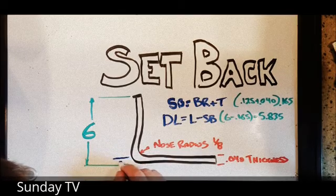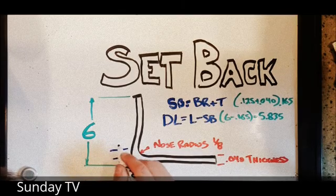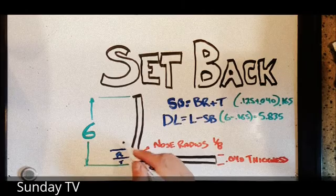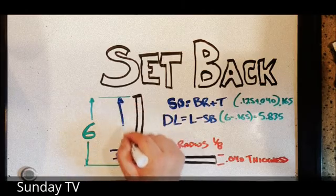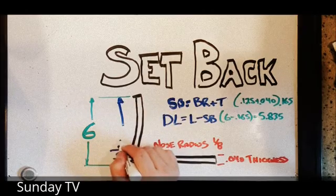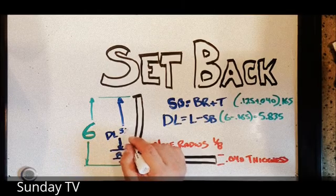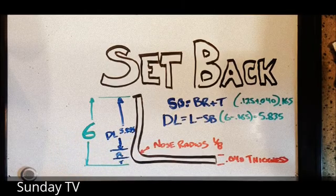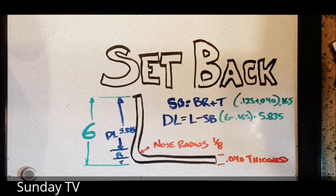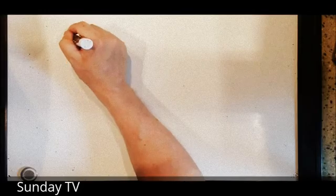So you can see here, our original length was six inches. We take off the thickness of the material, we take off the radius of the bend, and what we're left with is the final developed length of 5.835. That's setback. So we would do the exact same thing with the other leg.